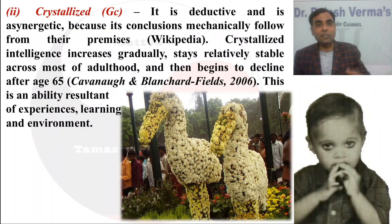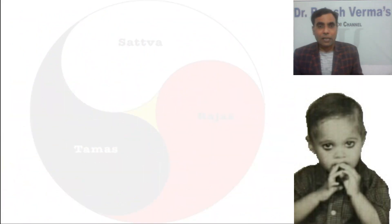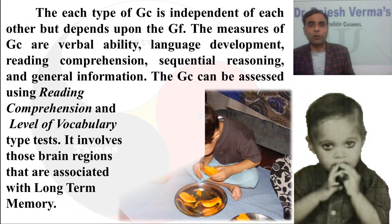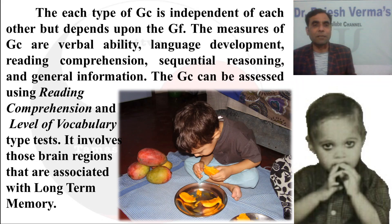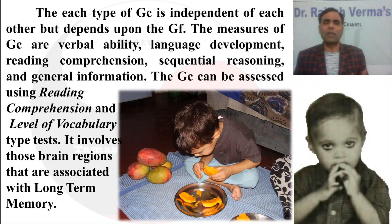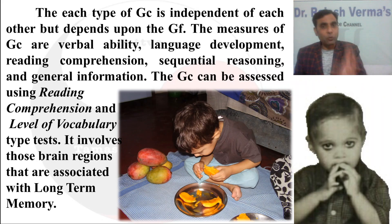Fluid intelligence is genetic and independent of experience, learning, schooling, and environment. Crystallized intelligence is the function of your immediate environment — the type of environment you get will form or ensure your crystallized intelligence. The types of GC are independent of each other but each depends upon GF. All crystallized intelligences are independent of each other but subsequently depend upon fluid intelligence.